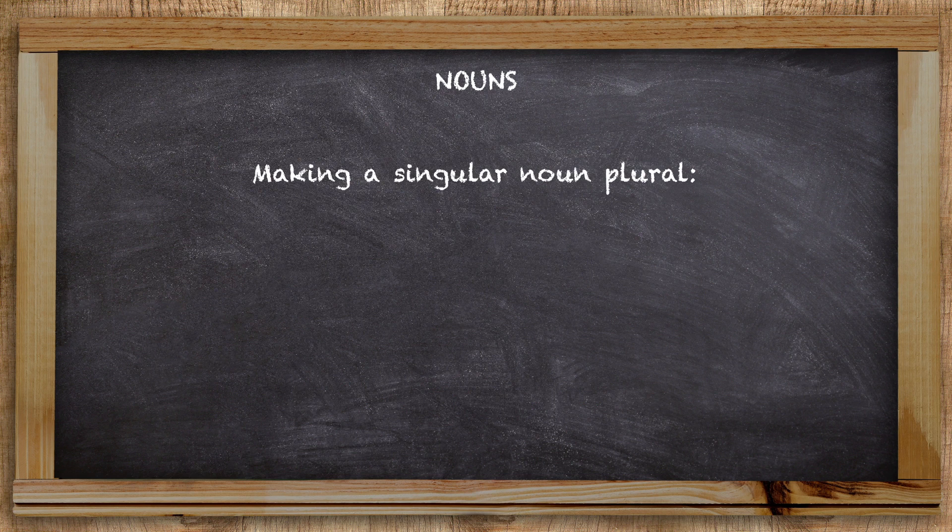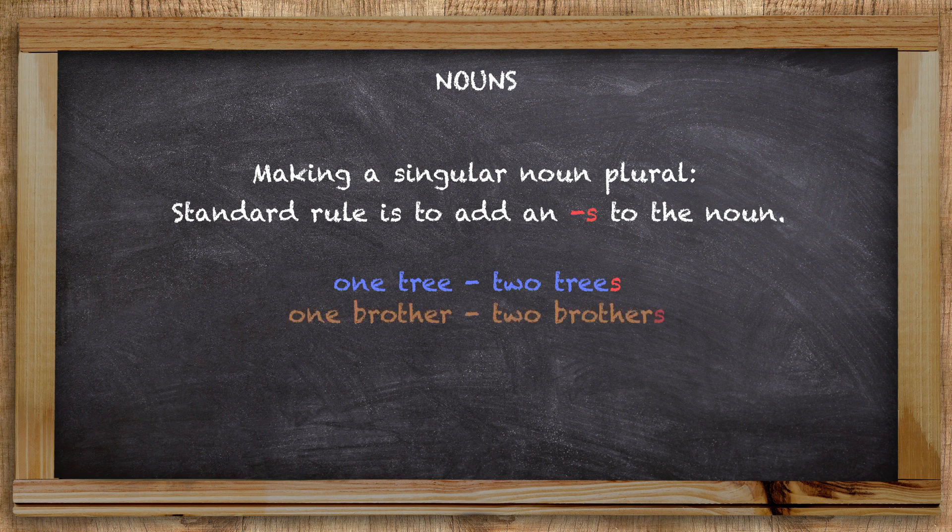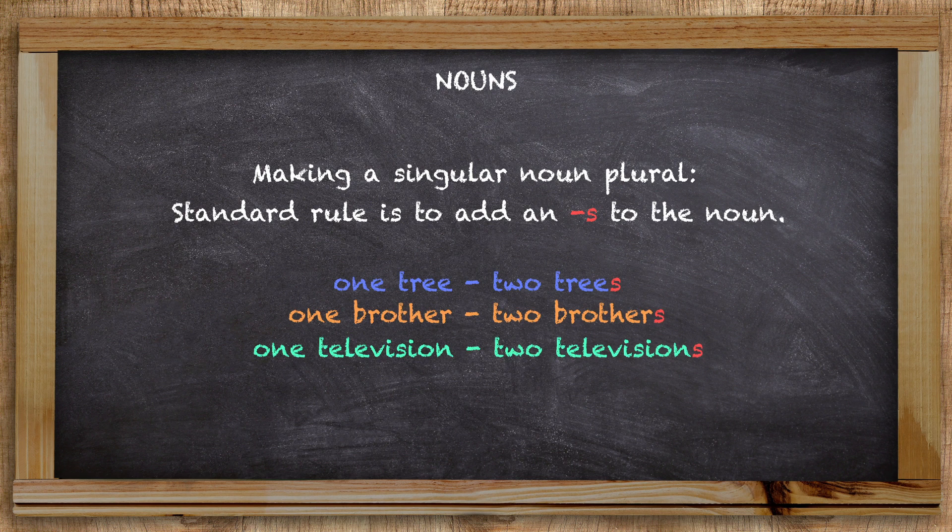There is a standard rule when it comes to changing a singular countable noun into a plural noun. This rule is to add an s to the noun. This means that you would have one tree but two trees, or one brother but two brothers, or one television but two televisions.